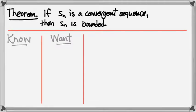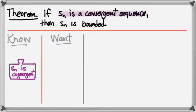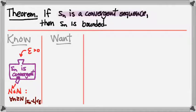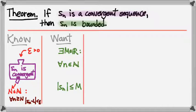Let's take a quick inventory of what we know and what we want to demonstrate. We know that Sn is a convergent sequence, so we have the definition of convergence — like a machine we can plug any epsilon greater than 0 into, and it produces a capital N such that for all little n greater than or equal to N, the sequence Sn is within a distance of epsilon of its limit. What we want to prove is that Sn is bounded: there exists a real number M such that for all natural numbers n, every term of the sequence satisfies |Sn| ≤ M.